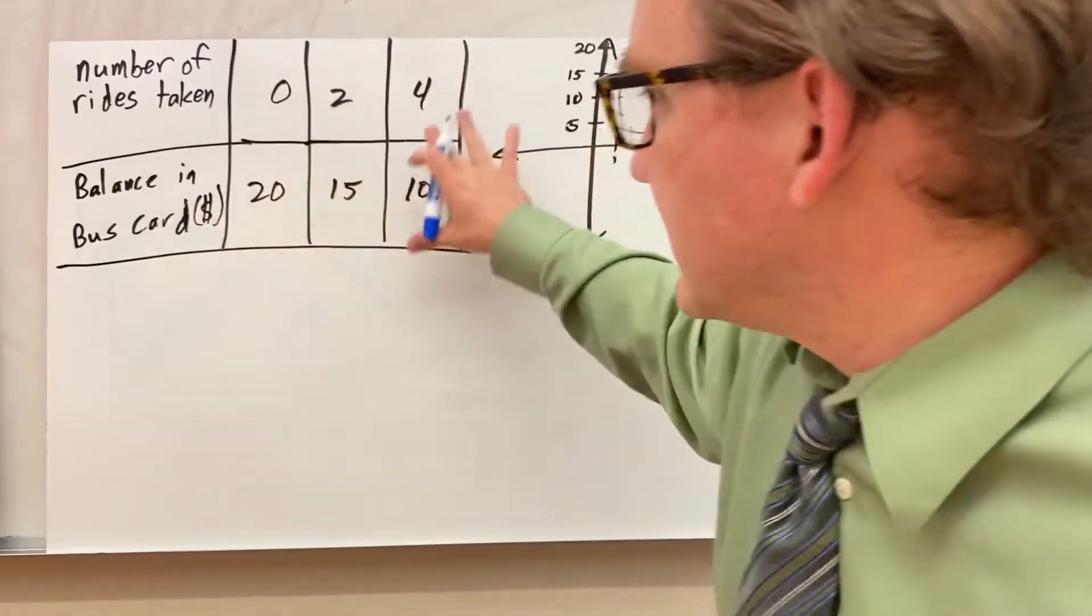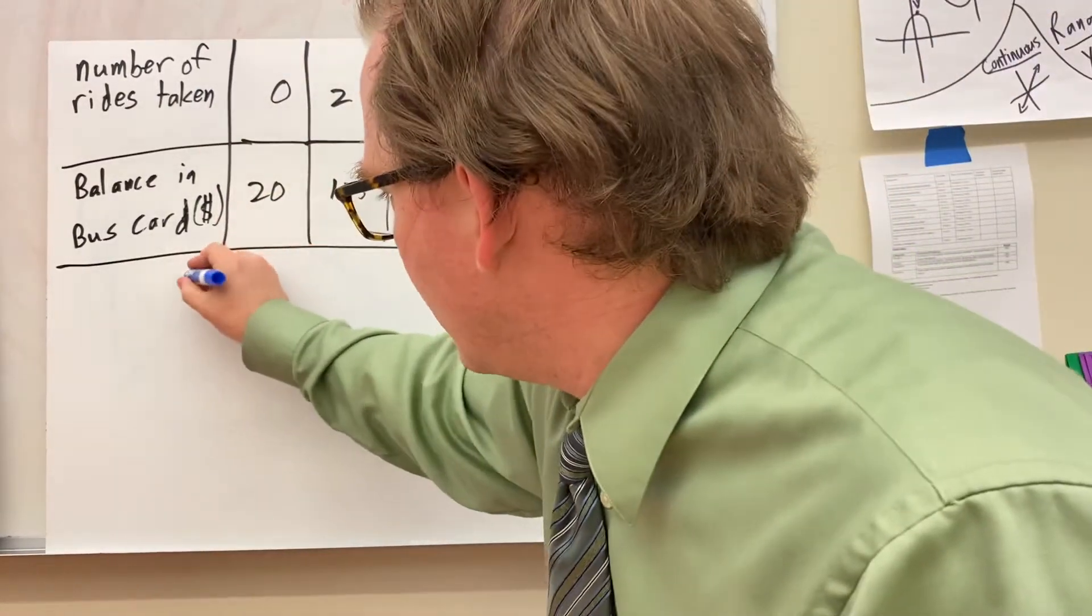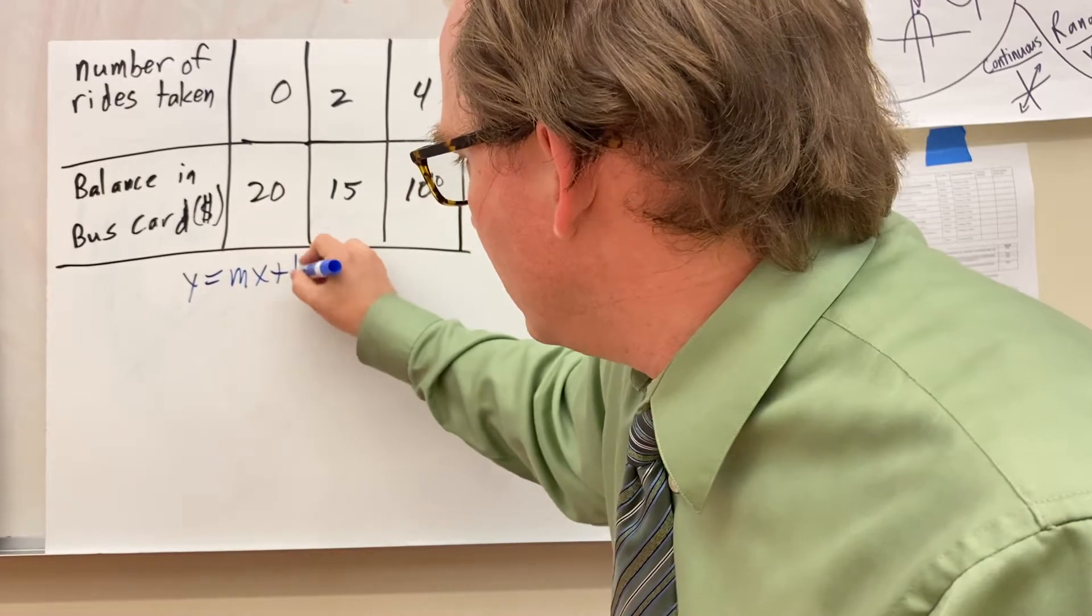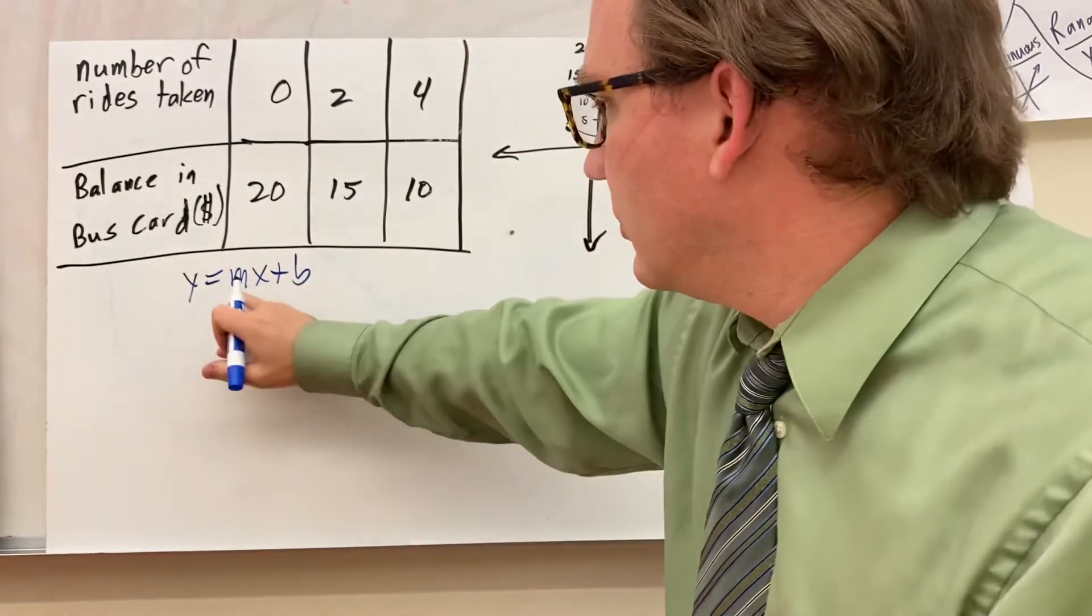For this first one, you have this table. And say we want to work in y equals mx plus b. We want to work in slope-intercept form. We've got to figure out the slope.